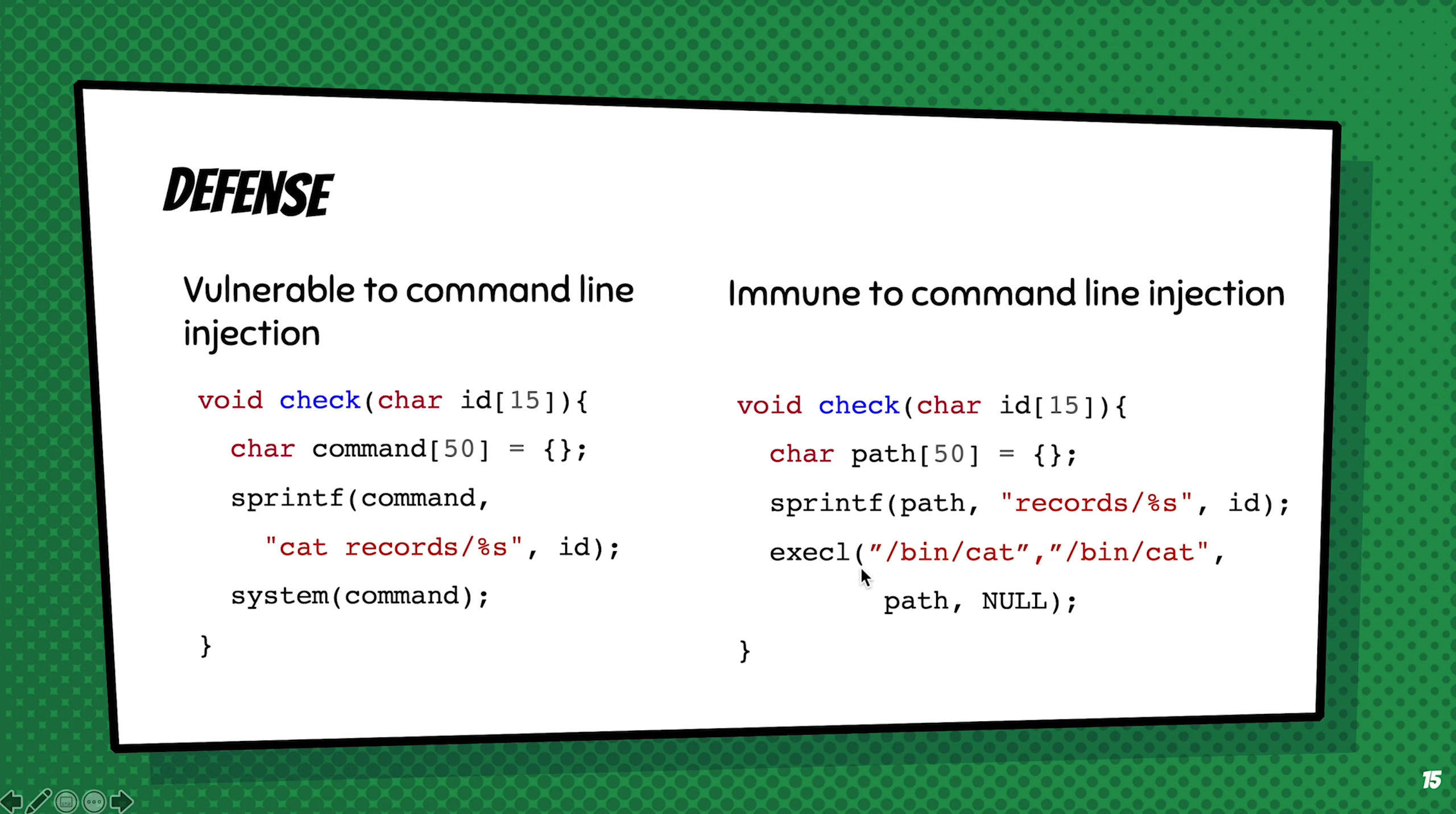In execl, the first argument represents the command that will be executed, followed by the arguments that are fed to the command. Pay attention that the first argument will always be the same as the command, and the function finishes with argument NULL.